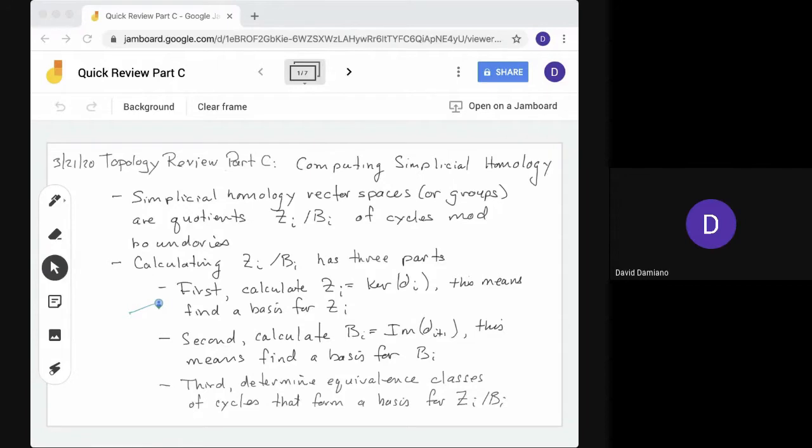First, we have to calculate the kernel of boundary i, so this means find a basis for it. Second, you have to calculate bi equals image of boundary i plus one, and again this means find a basis for bi. Third, we have to determine equivalence classes of cycles and form a basis for these. So that's what we'll do here and we'll work through an example.